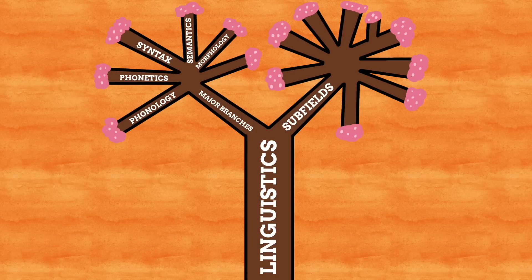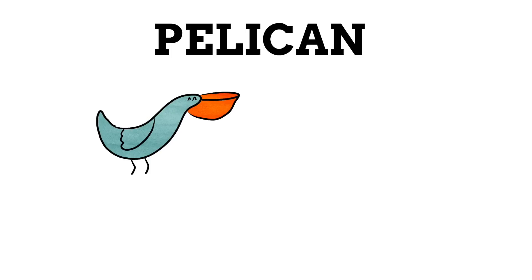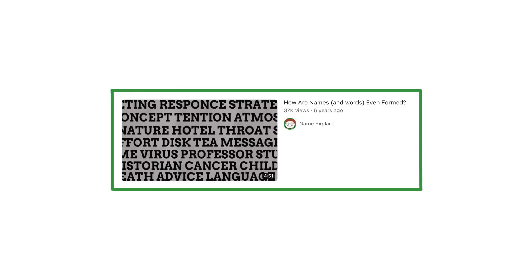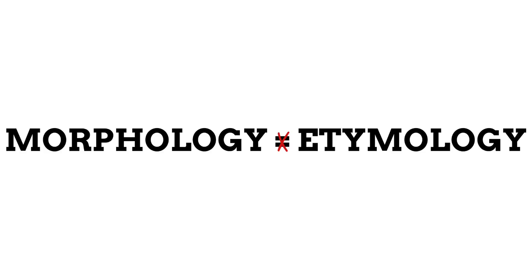Then we have morphology. This is when we study the actual structure of words — how they are formed, and how they can be changed and interact with other words. Morphology looks into how words are formed and the components that make them up, such as how we can add an S to the end of a word like 'pelican' and change it into 'pelicans,' meaning multiple of that bird. Morphology is one of the main things we focus on here at Namexplain, though morphology and etymology are actually two different things — etymology is a subcategory of a different field we'll highlight later on.